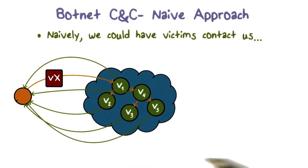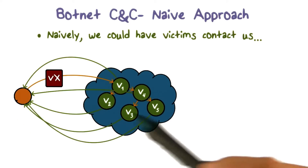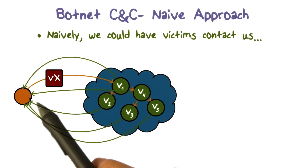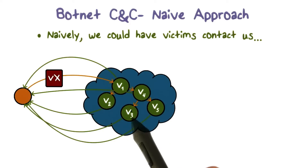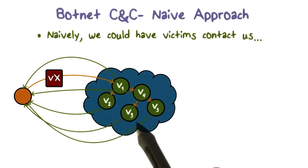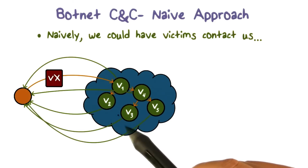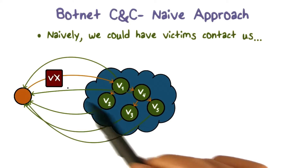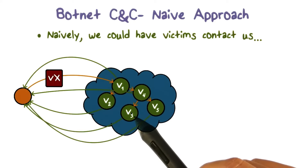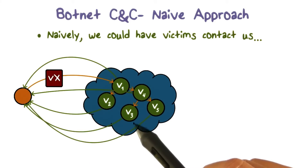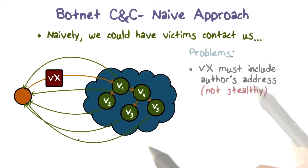As we said, our plan is to have the victims contact us. That is, after we spread the malware, each victim computer, or compromised computer, will somehow contact us. For example, we may hard-code in the malware some email address that we use, or even our IP address, and so on.